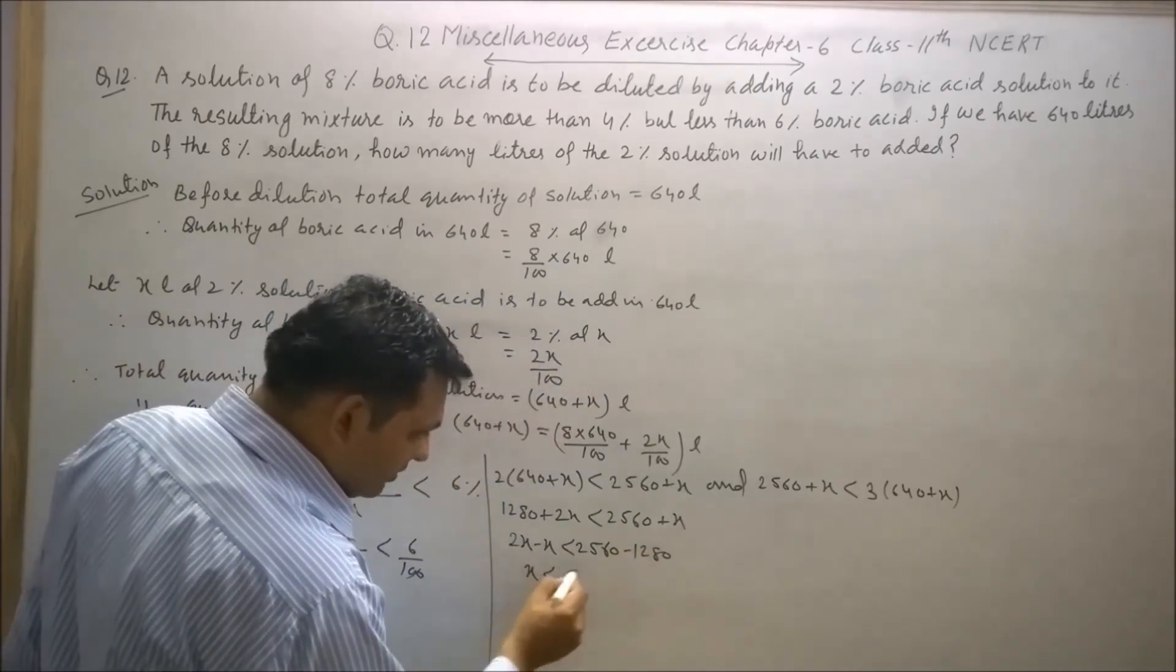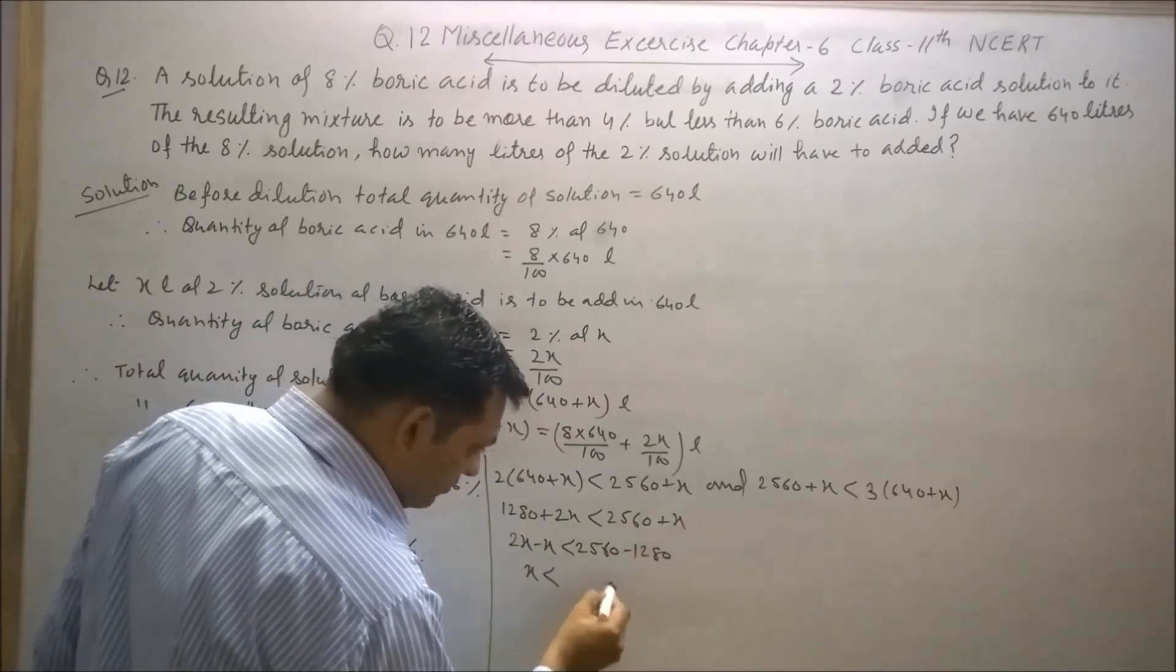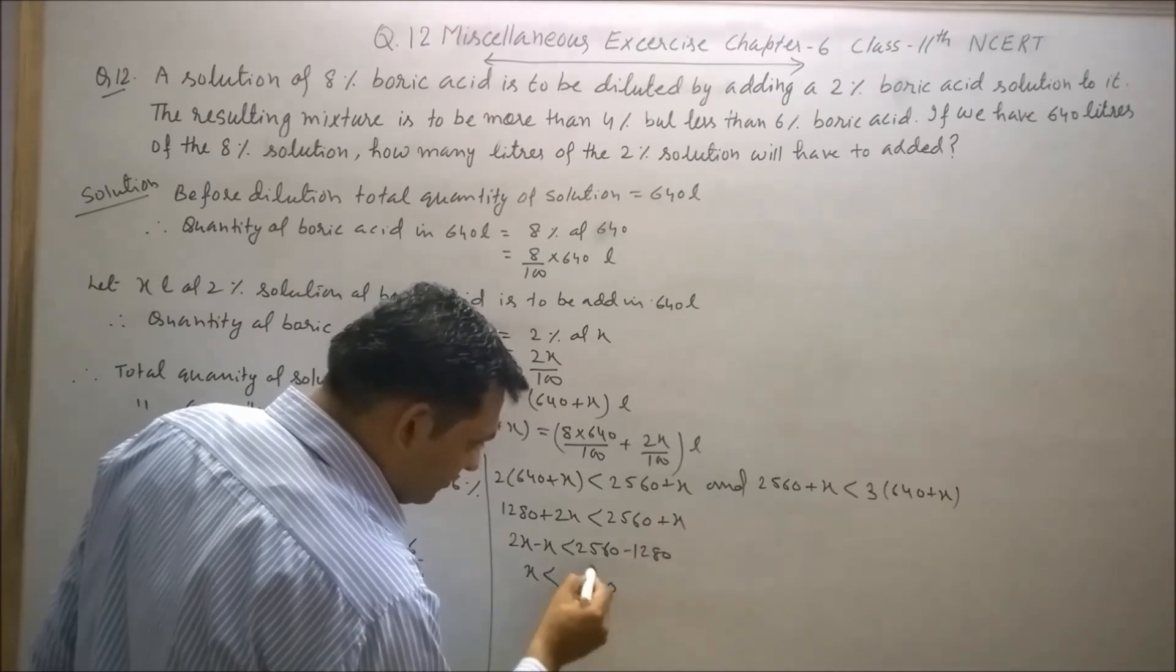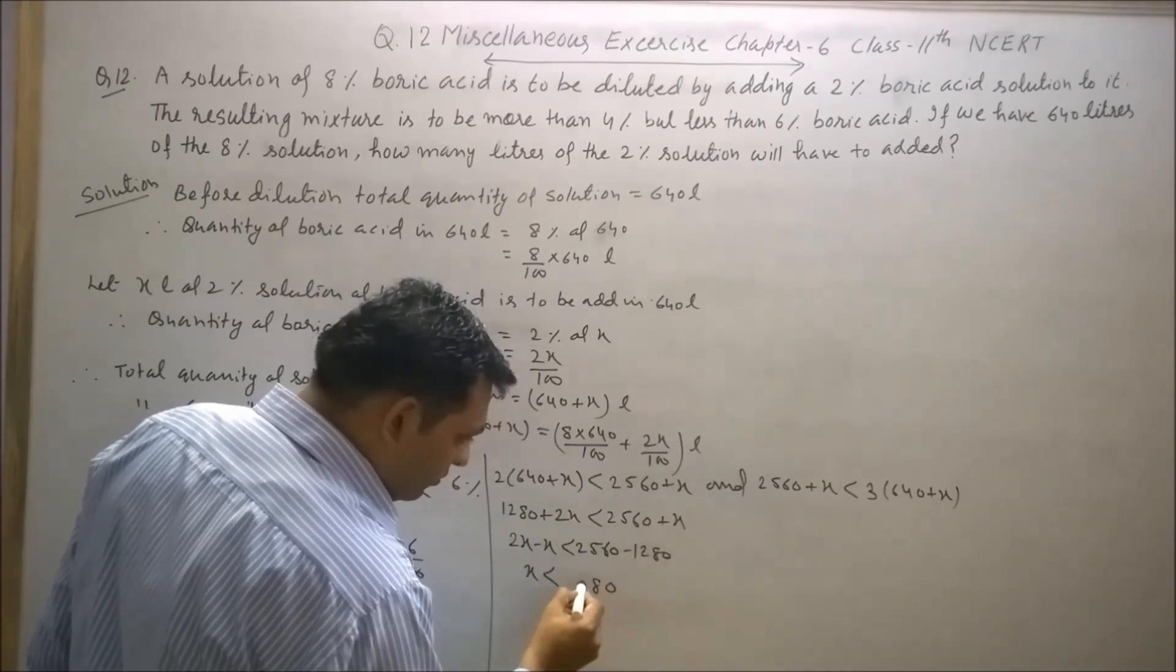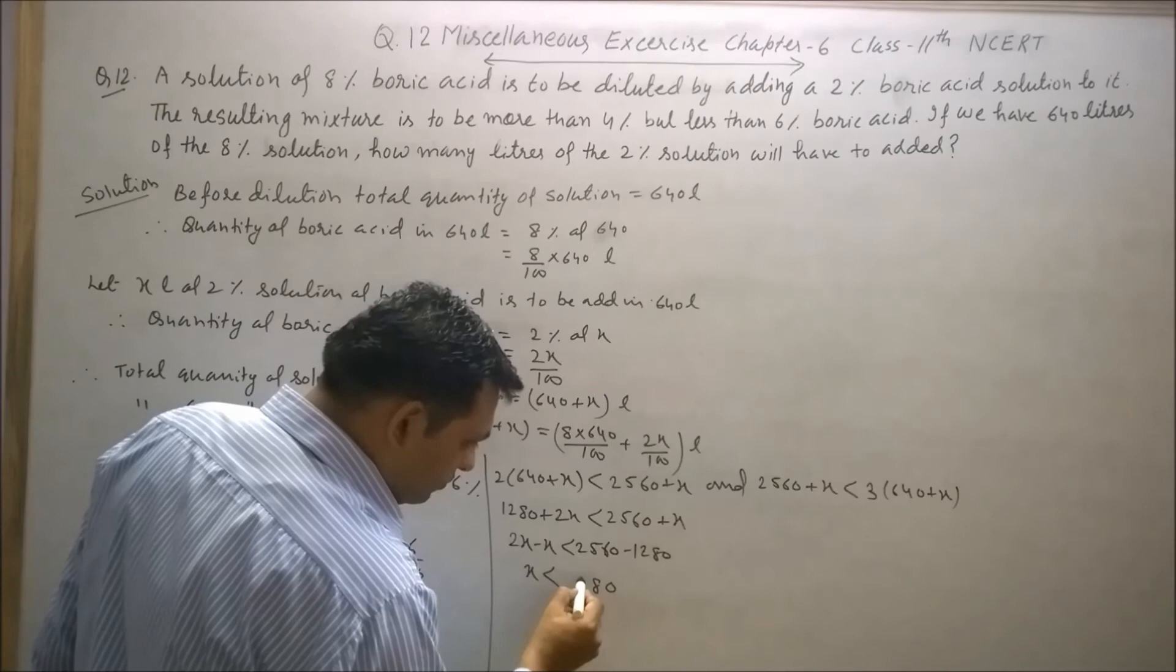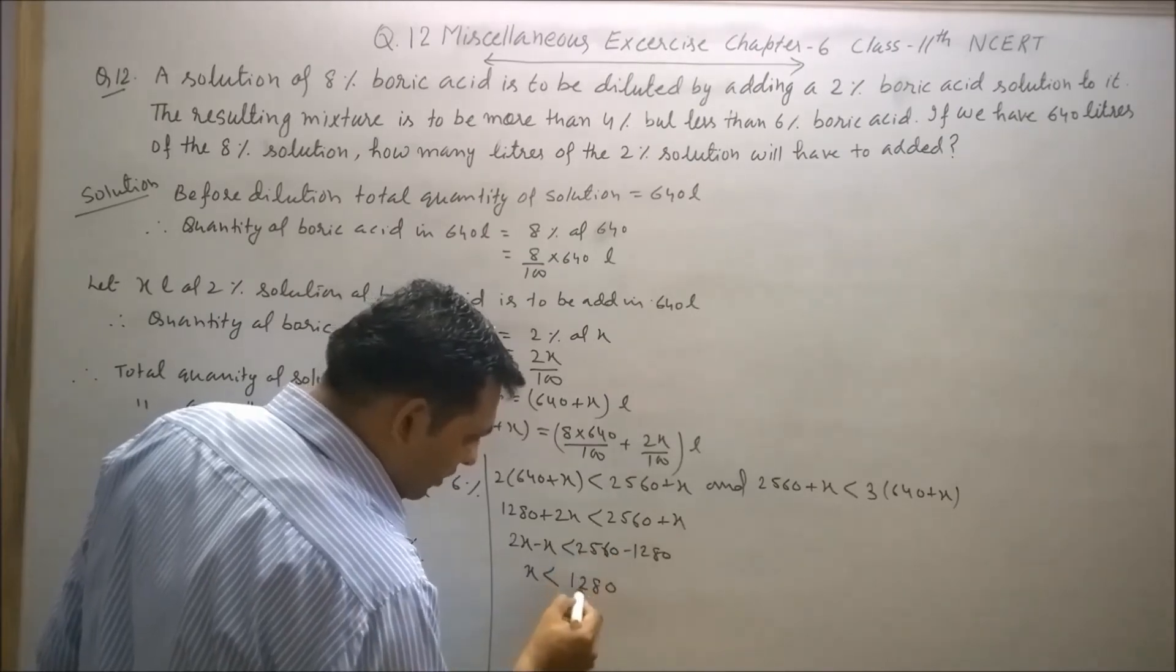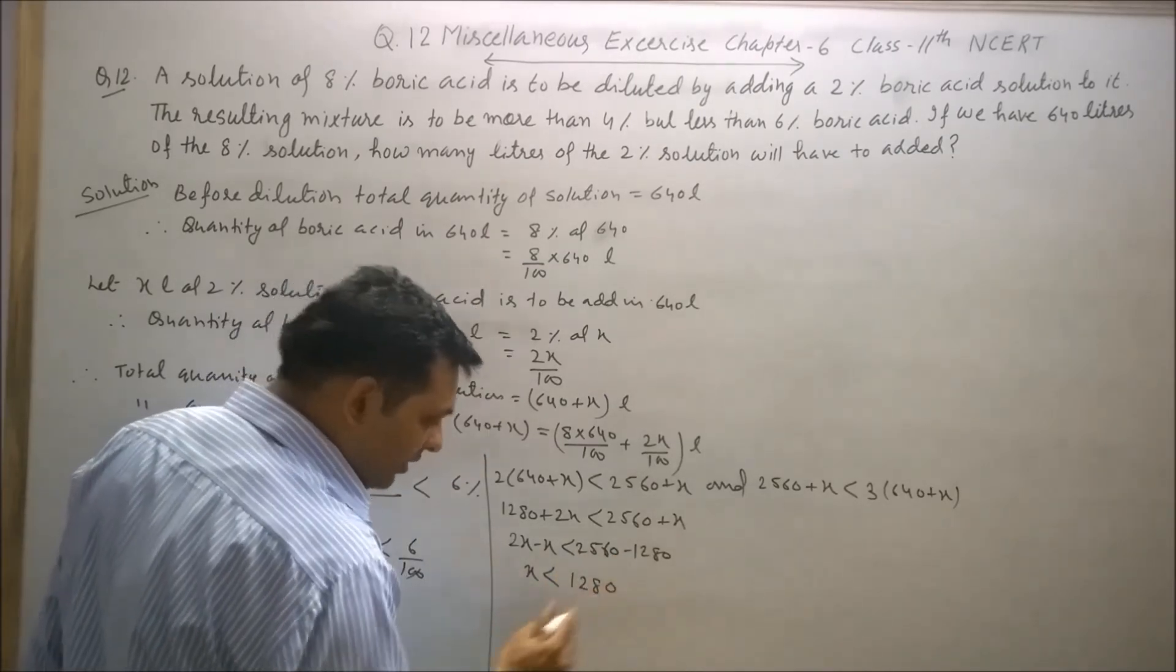This means x is less than—16 minus 8 is 8, 4 minus 2 is 2, 2 minus 1 is 1—which means x is less than 1280 liters.